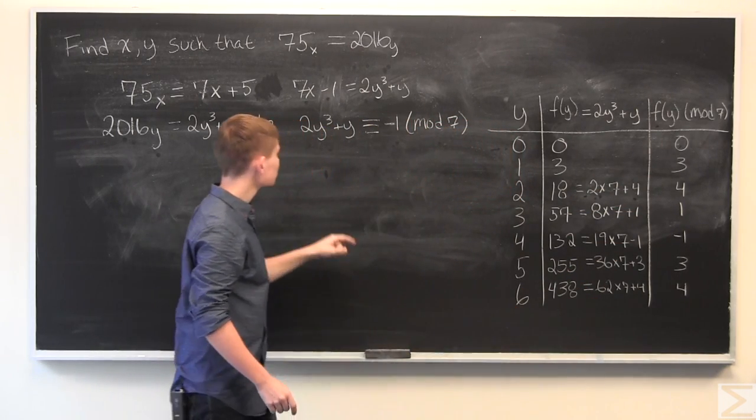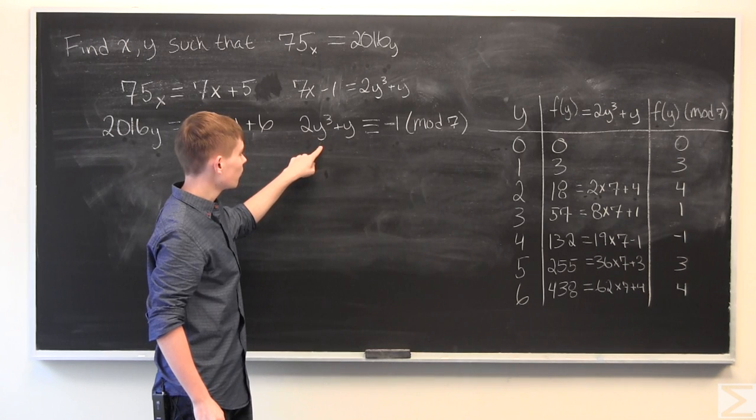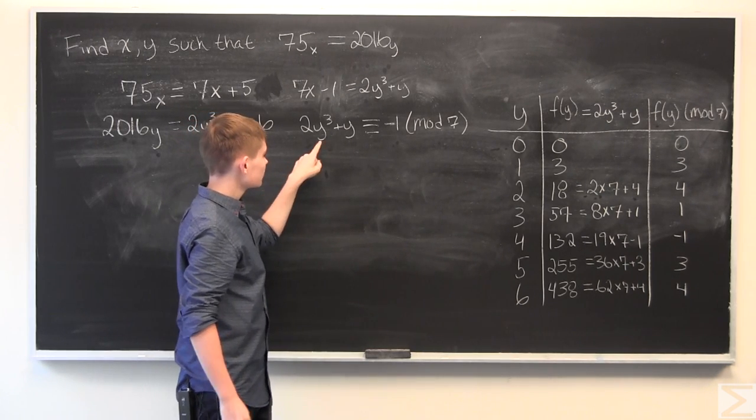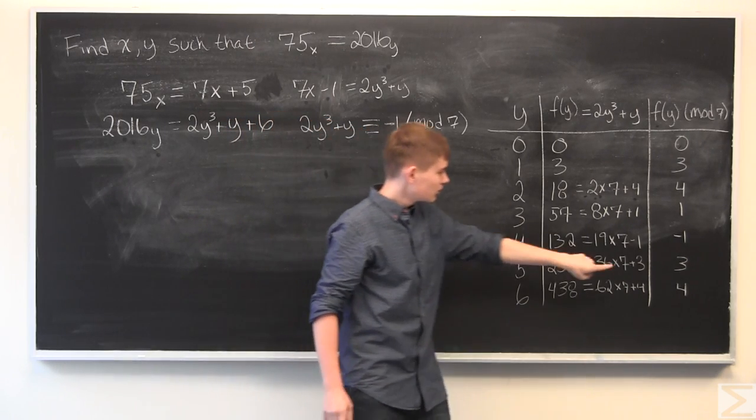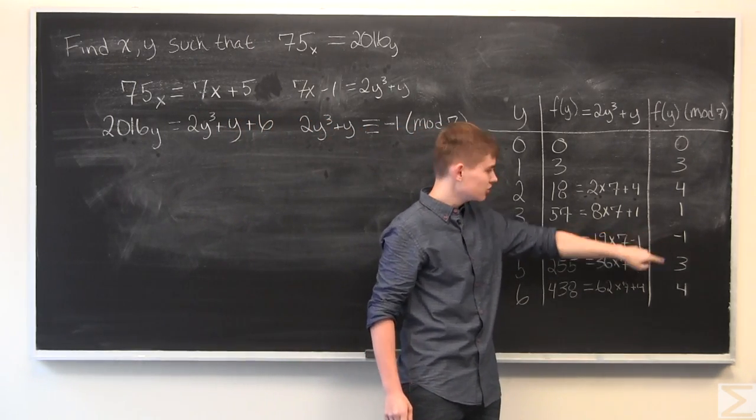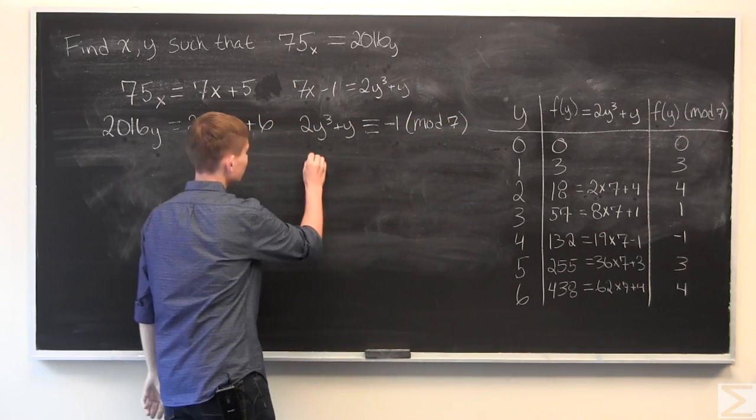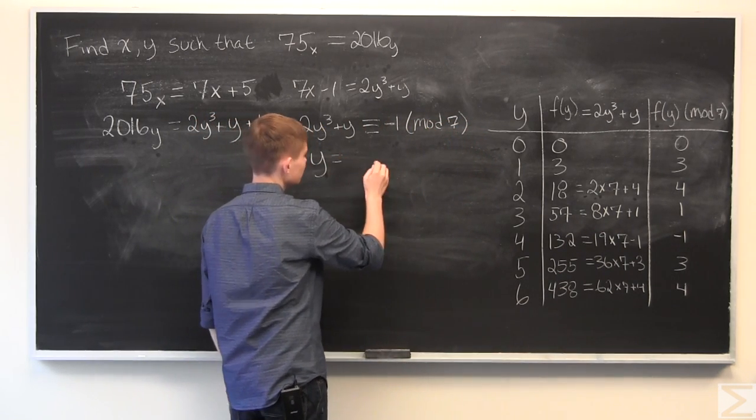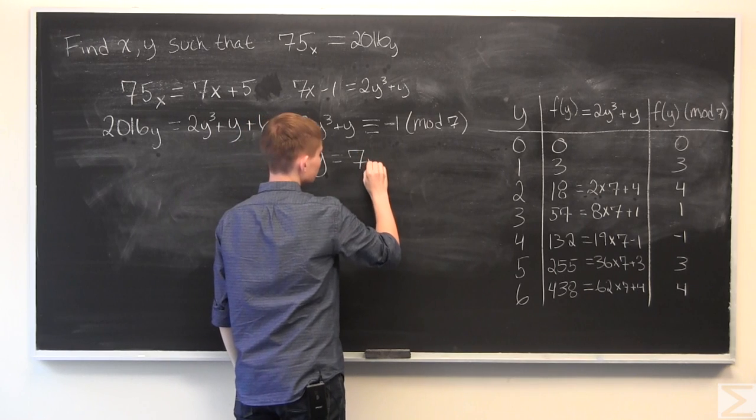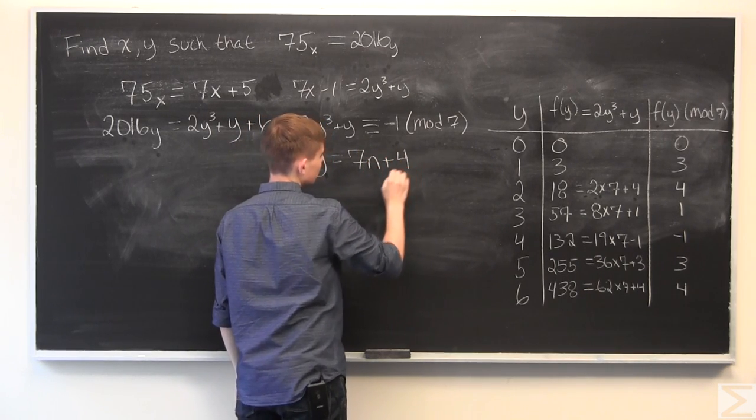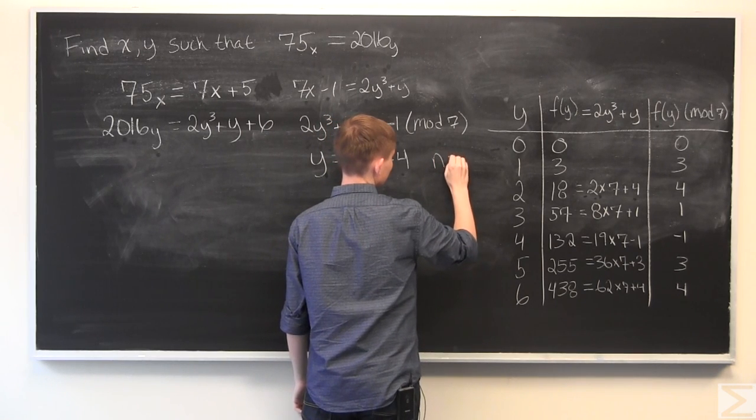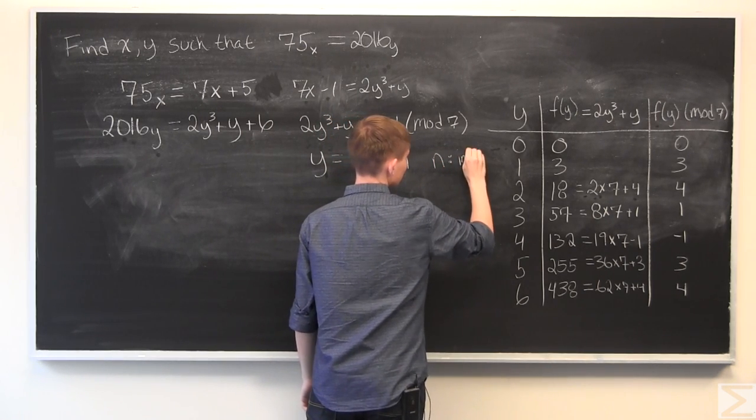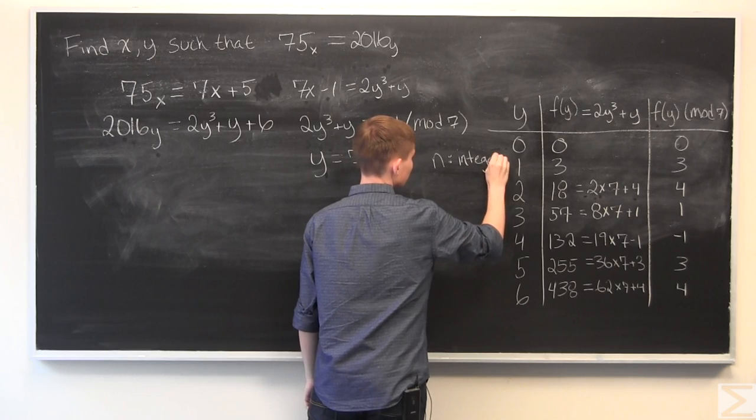And what we're doing is we're trying to find a value of y or a set of values of y such that f of y is congruent to negative 1 mod 7. There's only one way to do that. And that is if y is equal to a multiple of 7 plus 4. So, n is just an integer.